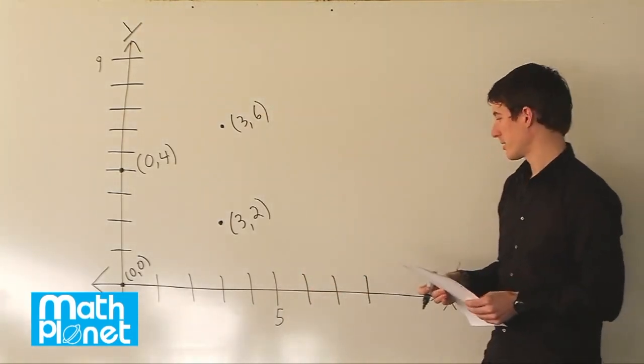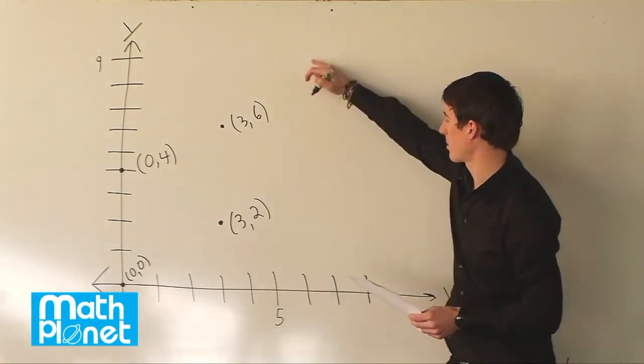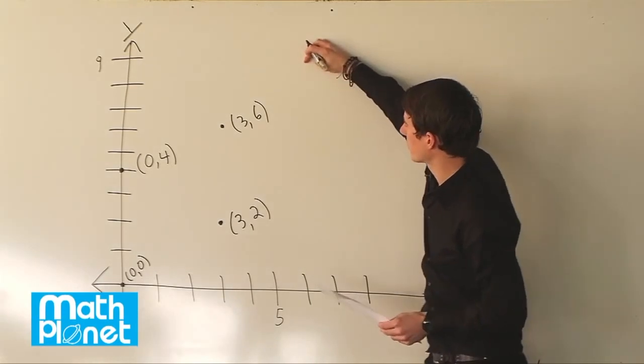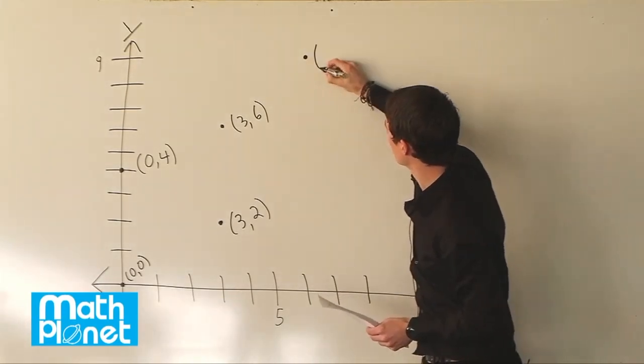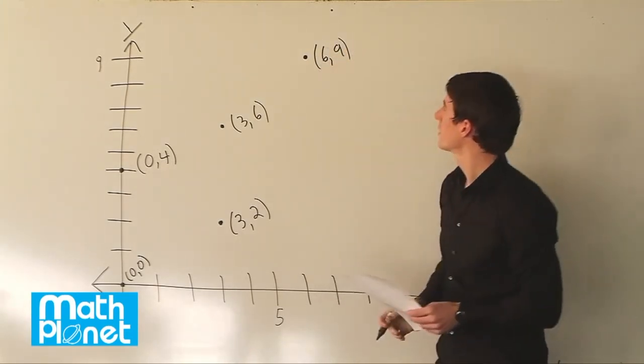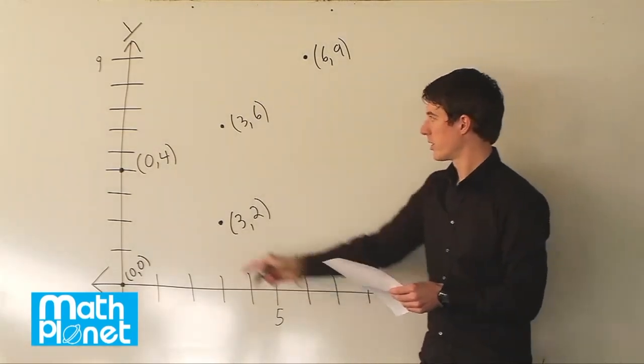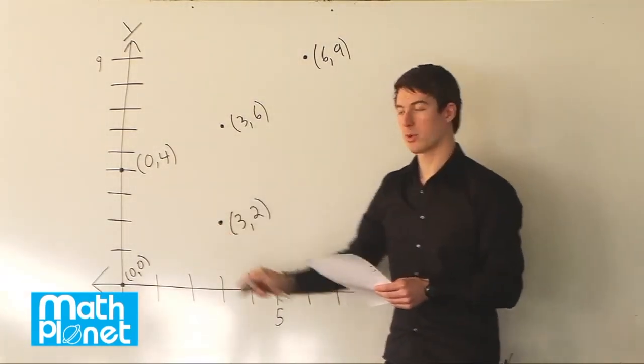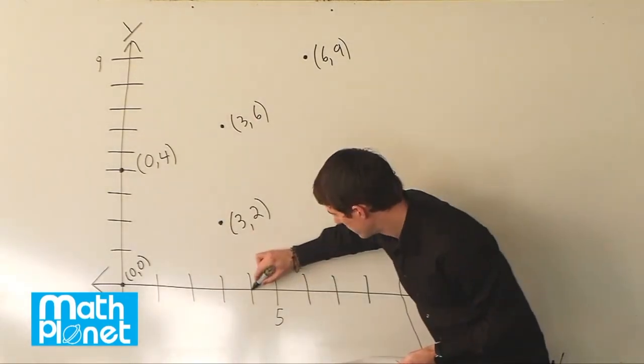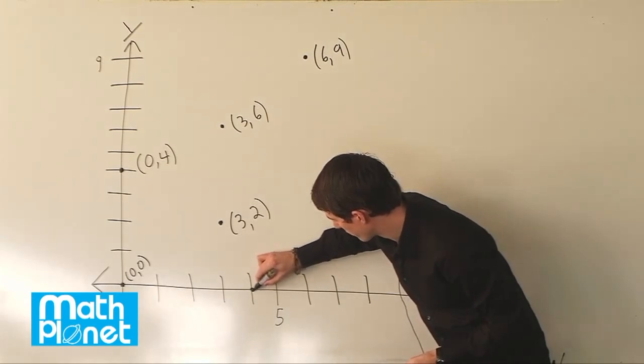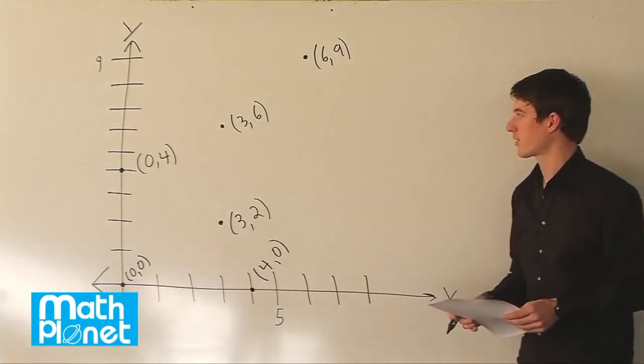And then we have 6 comma 9. So x is 6 and y is all the way up here at 9. So we just move straight up from 6 to about here. So here's the point 6 comma 9. x is 6 and y is 9. And lastly we have the point 4, 0. So not 0, 4 like this one, but 4, 0. So y is 0. We're on the x axis. And we're at the point x equals 4. So here we have the point 4 comma 0. And that's all of them.